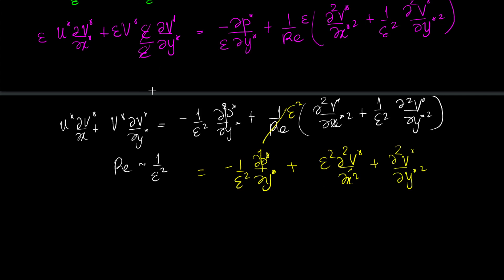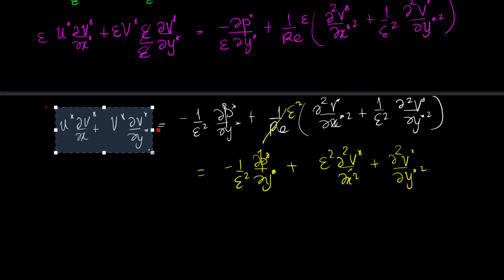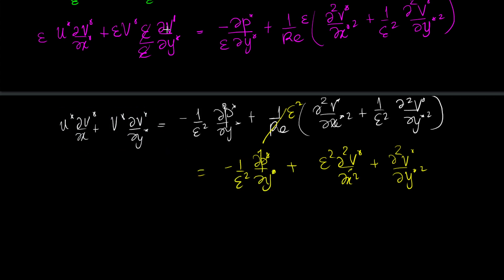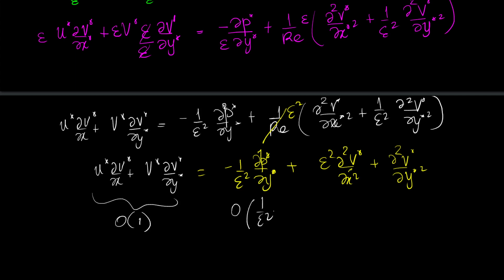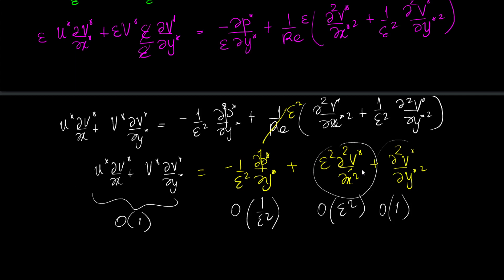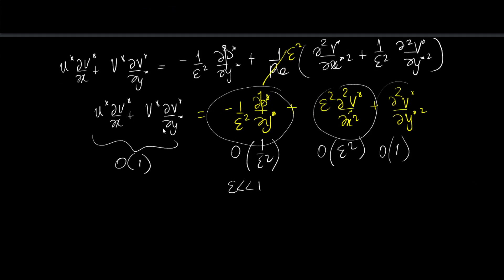Now let us look at which term will be the largest among these. The left-hand side terms are order 1. The pressure gradient term is order 1/epsilon², while the epsilon² viscous term is very small. The term of order 1/epsilon² is by far the largest when epsilon is very small, so the entire equation reduces at leading order to simply: 0 = -del P*/del Y*.